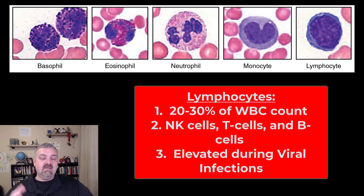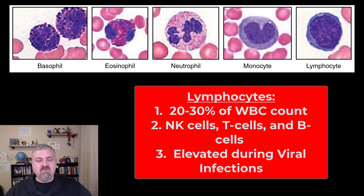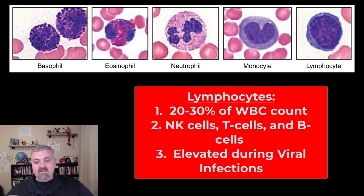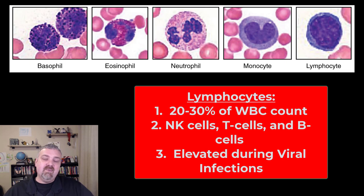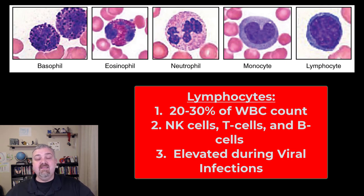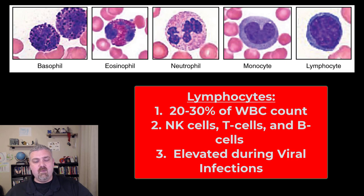Next we have lymphocytes. Lymphocytes will be covered in great detail when we talk about the lymphatic and immune systems, but for now they're the second most common white blood cell at 20 to 30% of the population. There are three major types: NK or natural killer cells, B cells, and T cells. T cells are involved in cellular mediated immunity. B cells are involved in humoral immunity or antibody immunity. Natural killer cells are involved in immunological surveillance. Lymphocytes are usually elevated when you see viral infections — with neutrophils think bacterial, with lymphocytes think viral. They're also elevated with some cancers like lymphoma.